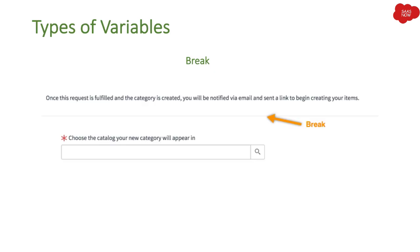Now the important part: you need to learn about the different types of variables. When you create a catalog item, the kind of input you are looking for from an end user varies — it can be a string, a number, an email address, an IP address, or data that already exists in your system. ServiceNow has designed these variables so you can utilize them on your catalog item form to meet requirements from your product owners, customers, and clients.